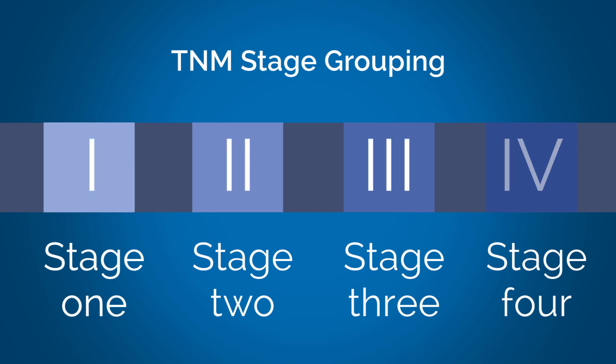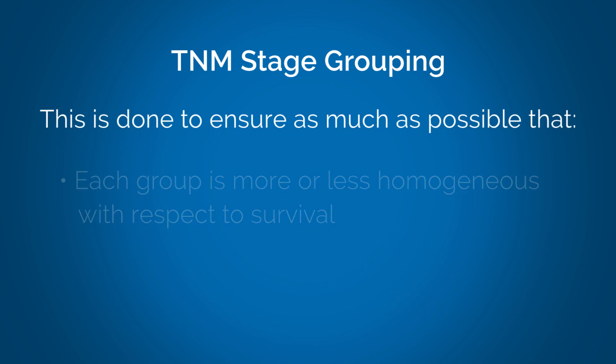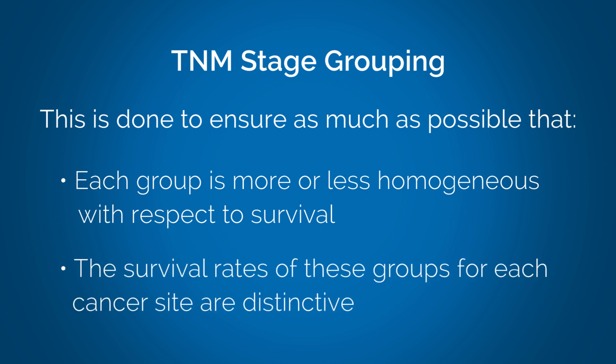II, III, and IV. For purposes of tabulation and analysis, it is necessary to condense the different TNM categories into a convenient number of TNM stage groups. Stage grouping is adopted in this manner to ensure, as much as possible, that each group is more or less homogeneous with respect to survival, and that the survival rates of these groups for each cancer site are distinctive.